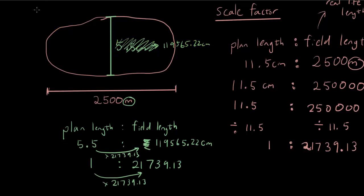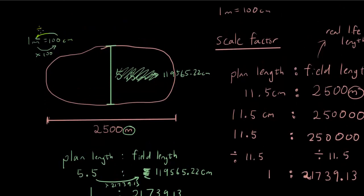So I'm going to convert from centimeters to meters. And if you guys remember, 1 meter is 100 centimeters. So to go from meters to centimeters, you would multiply by 100. But if you want to go backwards, you would divide it by 100. If you want to go backwards, you divide it by 100. So that's what I'm going to do to this. If I divide this by 100, then I'm going to get 1195.65 meters.